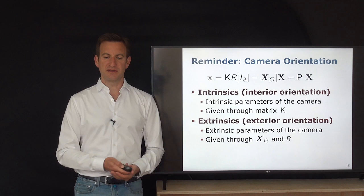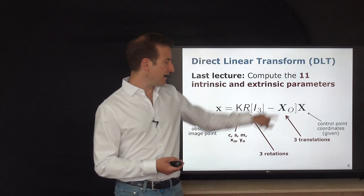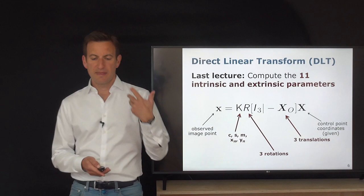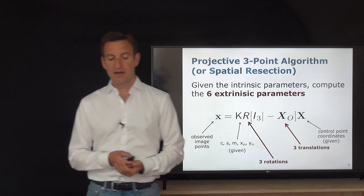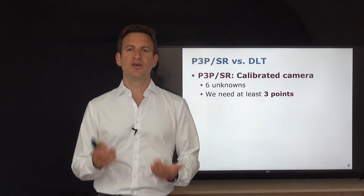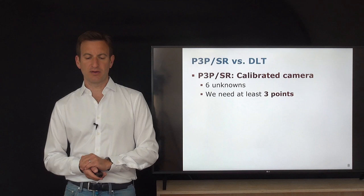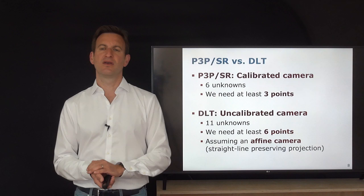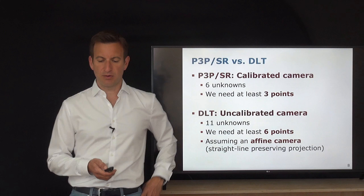Comparing to the DLT: there we estimated 11 parameters (K, R, and X0 — both intrinsics and extrinsics). In spatial resectioning, K is given, so we only have six extrinsic unknowns: three rotation components and three translation components. This means we need only three points (six observations) rather than the six points required by DLT, which also had to estimate the five unknown intrinsic camera calibration parameters.